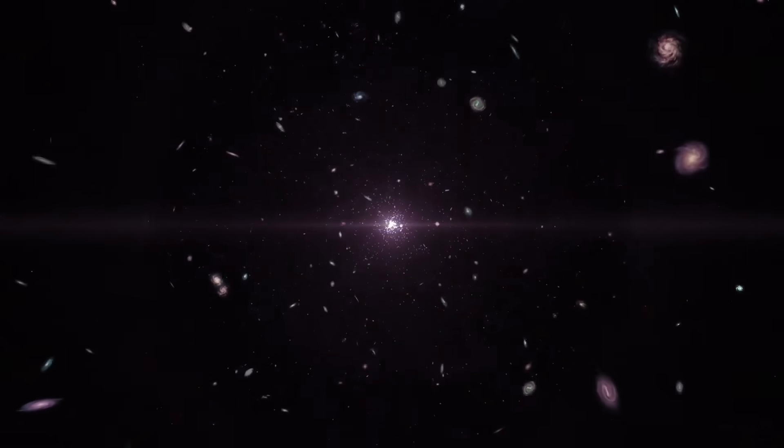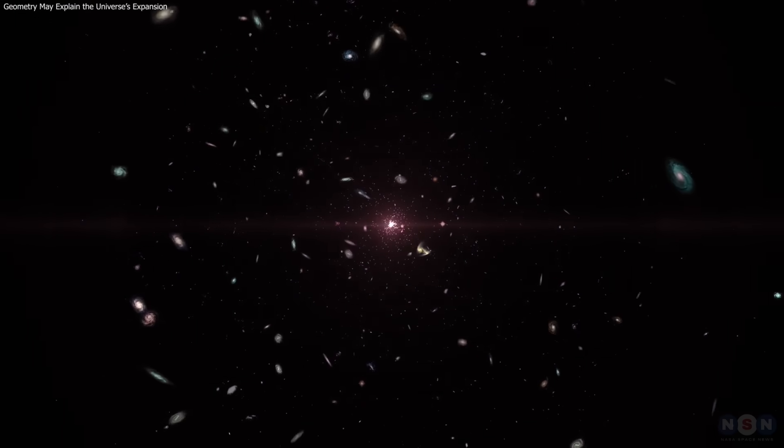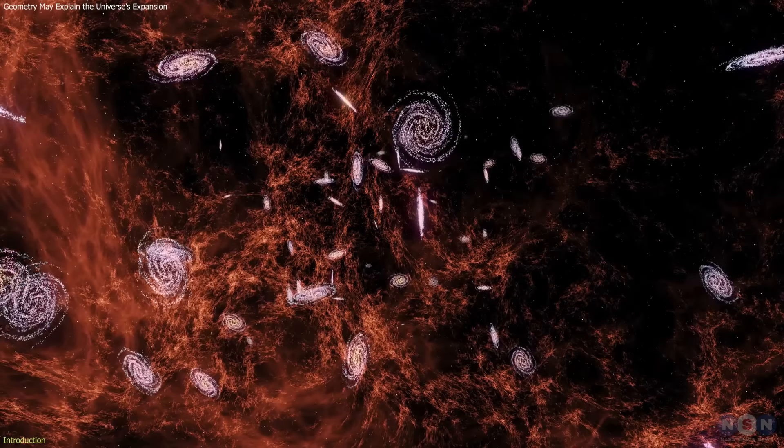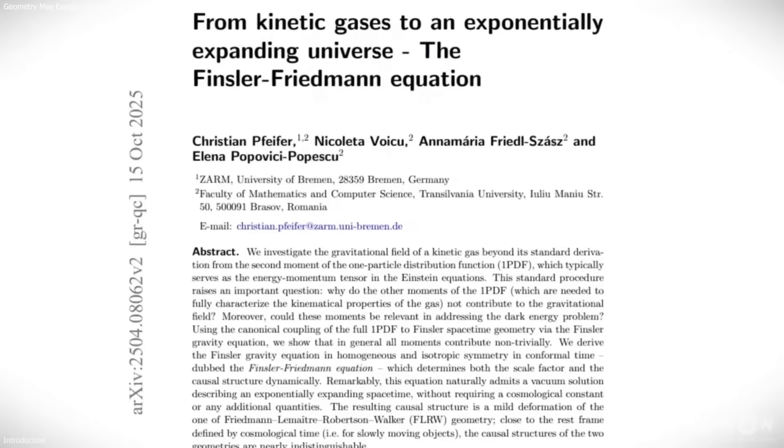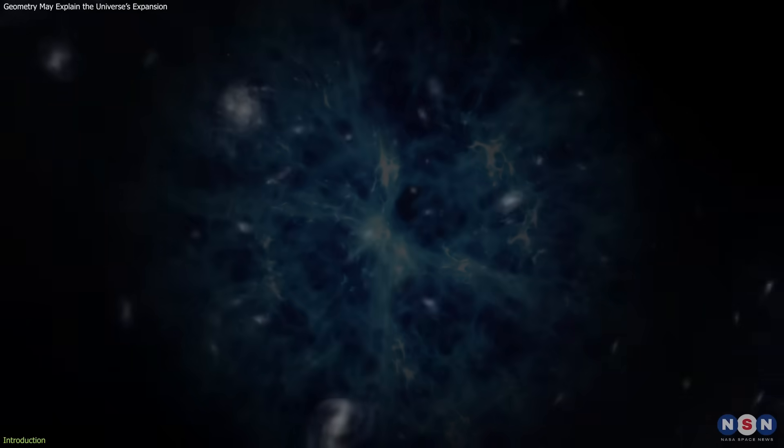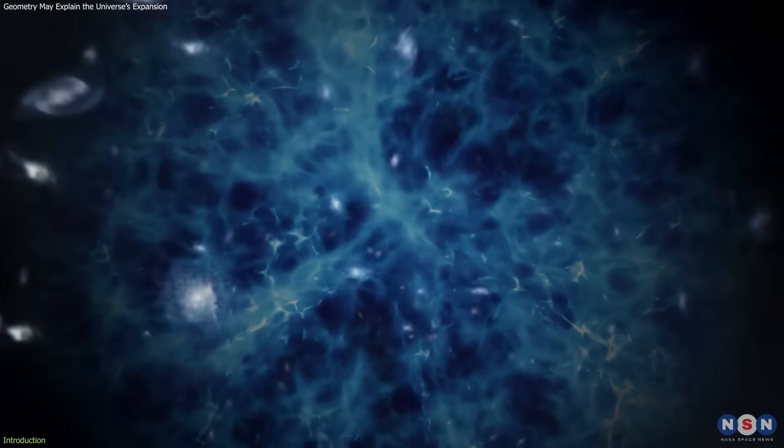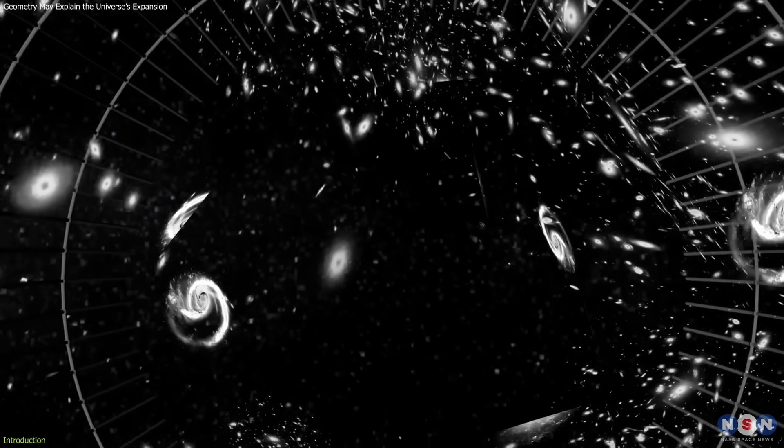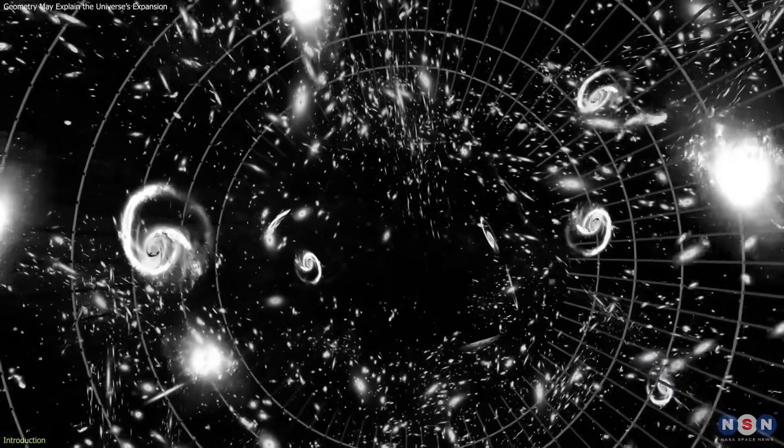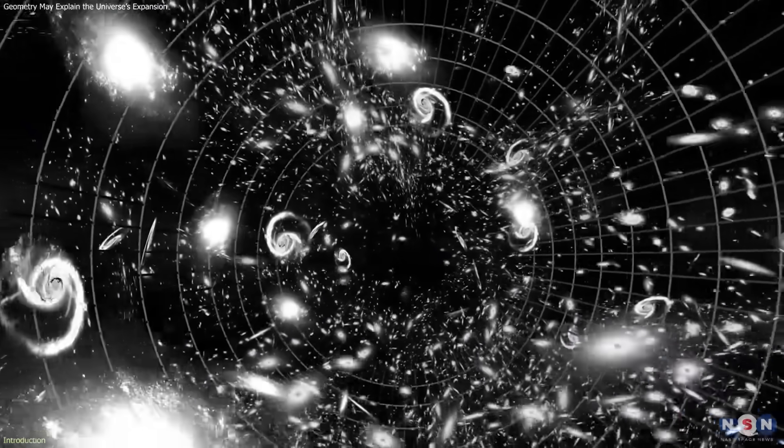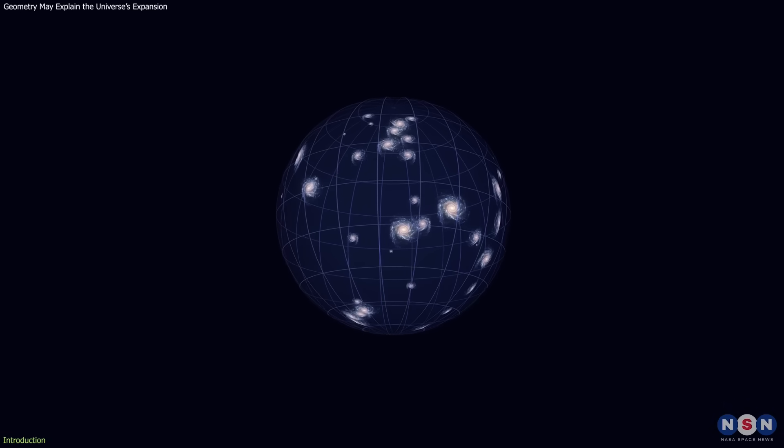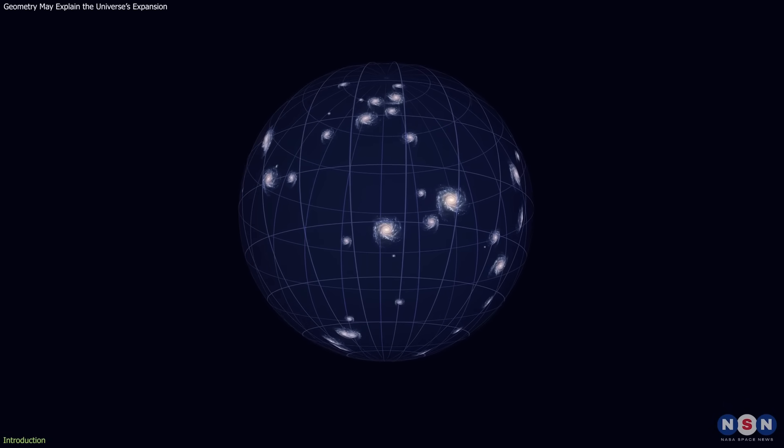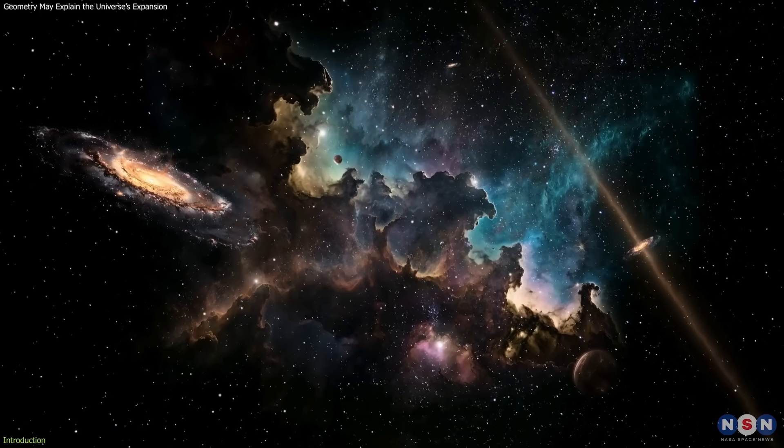For decades, astronomers have explained the universe's accelerating expansion by invoking something mysterious – dark energy. But a new study proposes a different idea. Instead of adding an unknown force, the researchers suggest that the acceleration could come directly from the geometry of spacetime itself, using a mathematical framework called Finsler geometry. This approach might explain the expansion without introducing dark energy at all – a potential shift in how we understand the cosmos.